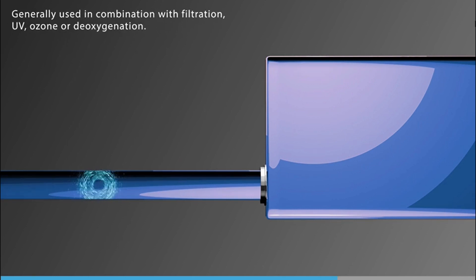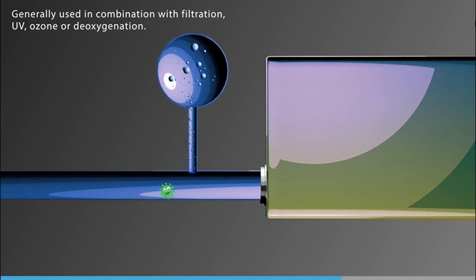Ballast water treatment systems may combine cavitation with filtration, UV, ozone, or deoxygenation. Deoxygenation may be used in combination with other technologies such as cavitation or pasteurization. This treatment method involves stripping the oxygen from the ballast water to suffocate organisms. This is usually done by injecting nitrogen or another inert gas into the ballast water.